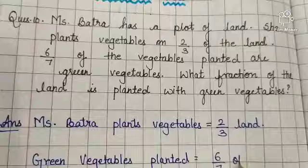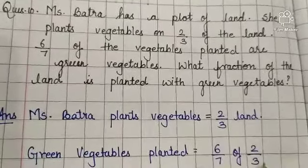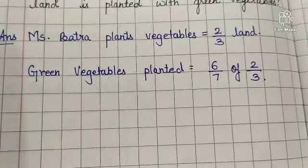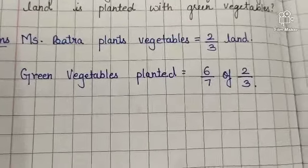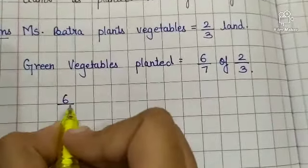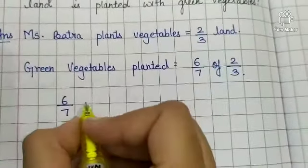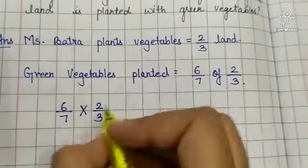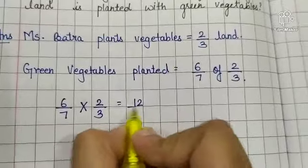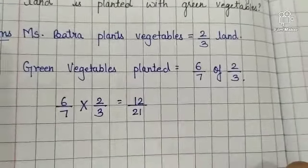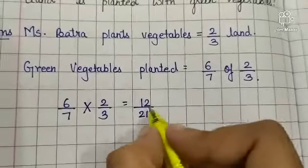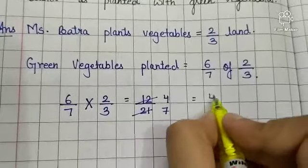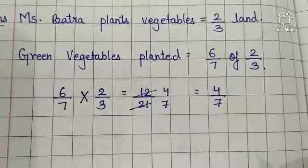6 by 7 of the vegetables, 2 by 3 — that is, 6 by 7 of 2 by 3 was green vegetables planted. In place of 'of', put a multiplication sign. So 6 upon 7 multiplied by 2 by 3. Now, 6 twos are 12 upon 7 threes are 21. Then cancel: 3 fours are 12 and 3 sevens are 21. So the answer is 4 by 7.